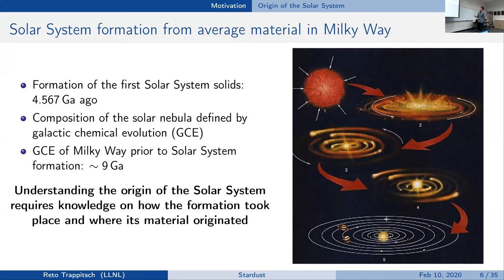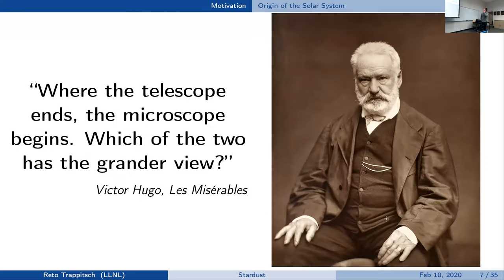Our whole approach in cosmochemistry and meteoritics is trying to understand the early solar system — the samples we have around that we can study in the lab in great detail. Understanding the solar system requires us to understand how galactic chemical evolution took place, how we came from hydrogen and helium to the inventory we have today in terms of elements and isotopes. There's an interesting quote from Victor Hugo in Les Misérables: 'The telescope ends, the microscope begins — which one has the grander view?' Keep that in mind.